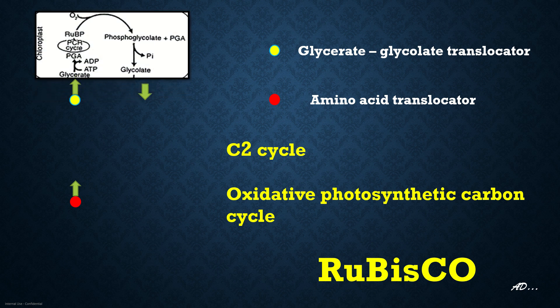In the chloroplast, oxygen reacts with RuBP, or ribulose 1,5-bisphosphate, to form phosphoglycolate and phosphoglycerate. This reaction is mediated by Rubisco. The phosphoglycolate that is formed is then converted to glycolate by the enzyme phosphoglycolate phosphatase.